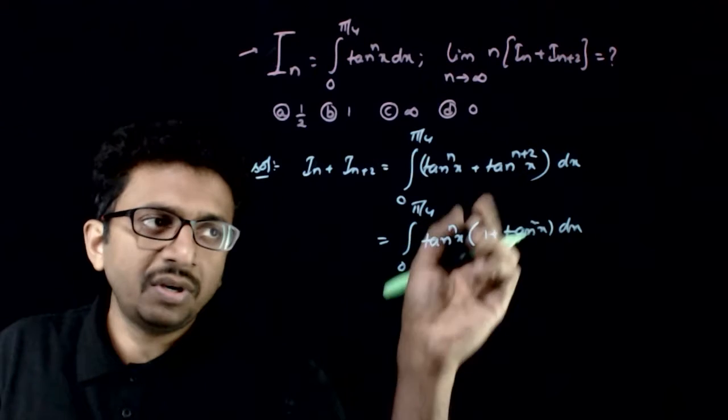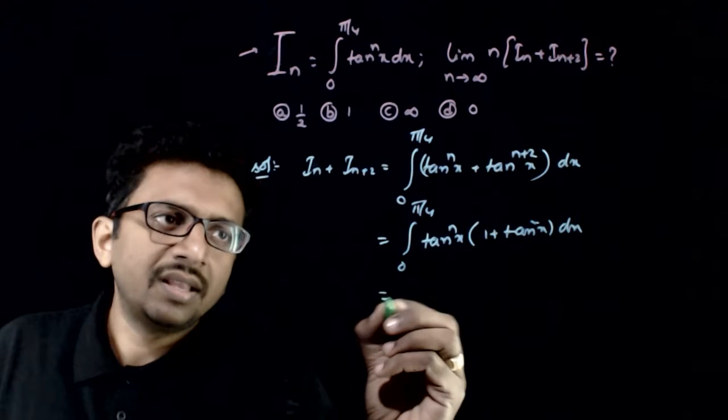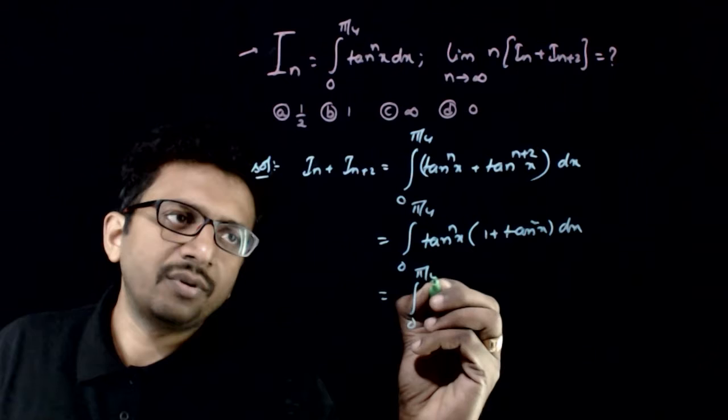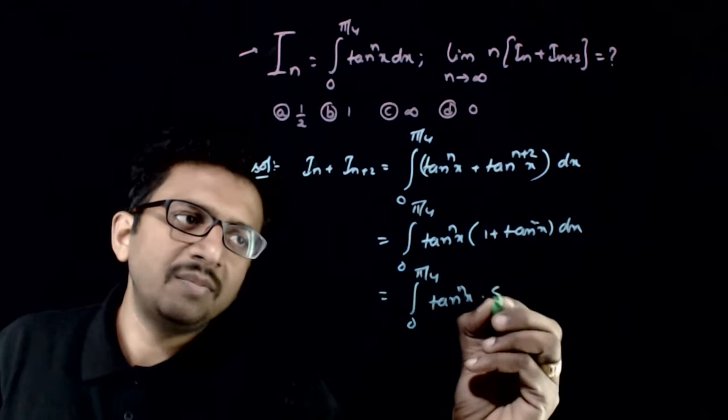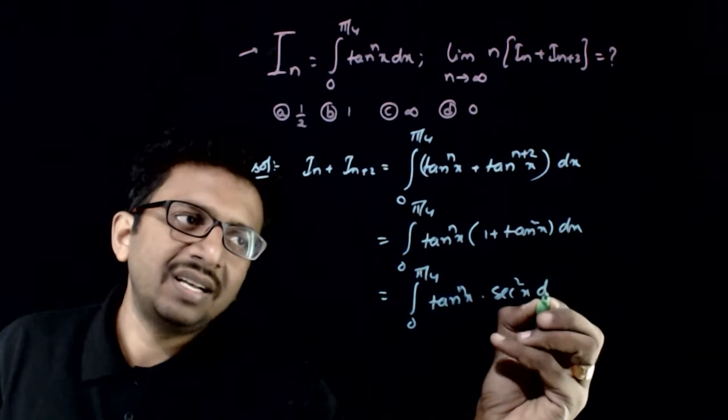If I take tan to the power nx as common, that is equal to the integration from 0 to pi by 4 of tan to the power nx times secant square x dx.